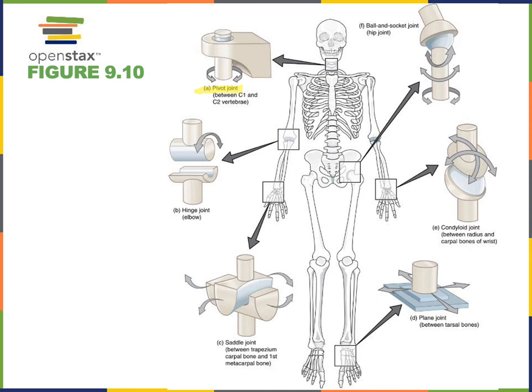Rotation means we can move around the long axis of the body, rotating to the right or rotating to the left. The example here is the atlanto-axial joint — the joint between C1 and C2, the first two cervical vertebrae. The atlas and axis form this pivot joint, enabling you to rotate your head at the neck. If you are shaking your head left and right to indicate 'no,' you are rotating the atlanto-axial joint.